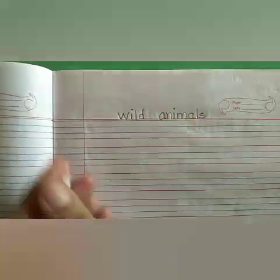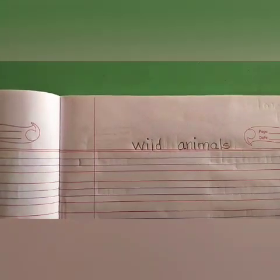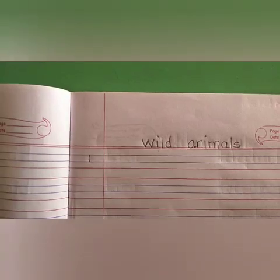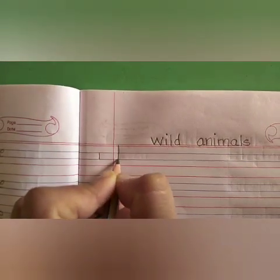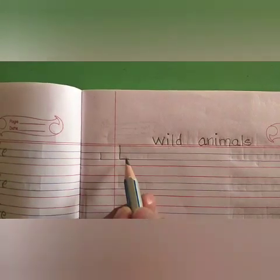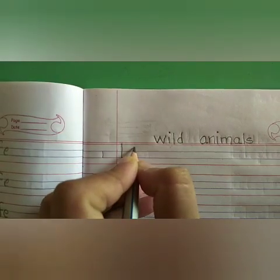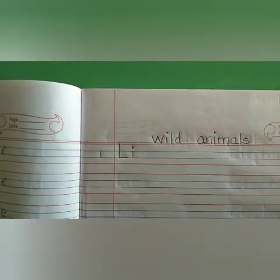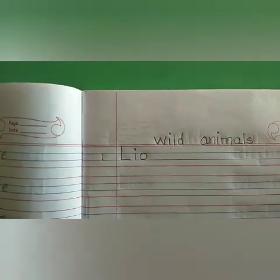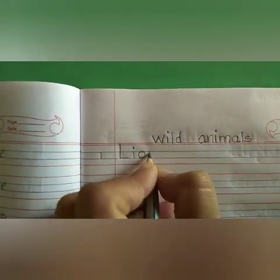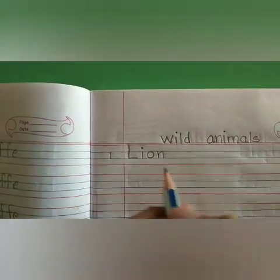Now we will write the first line. We will write number 1 between the two blue lines, then we will write the spelling of lion. We will write capital L from the red line till the blue line — this is the margin line. Capital L, then small i, small o, small n — L-I-O-N. Lion.